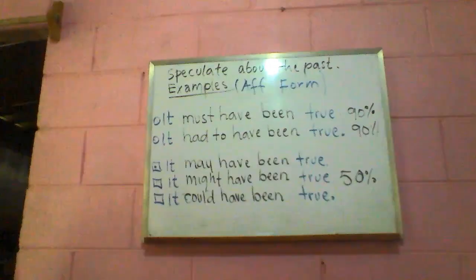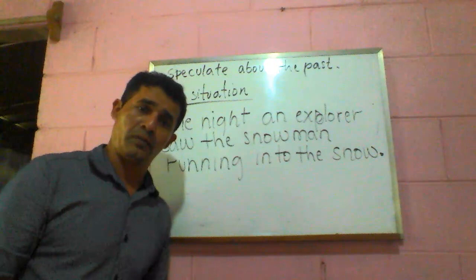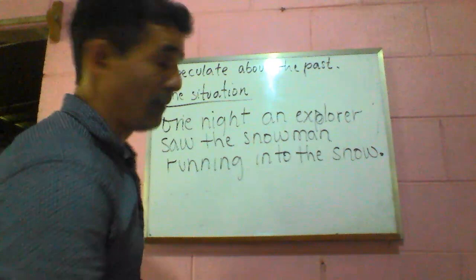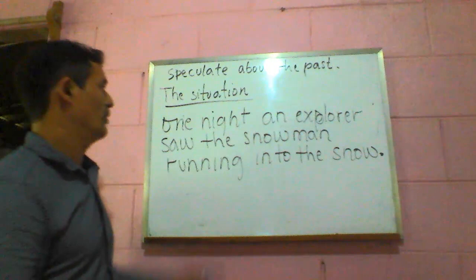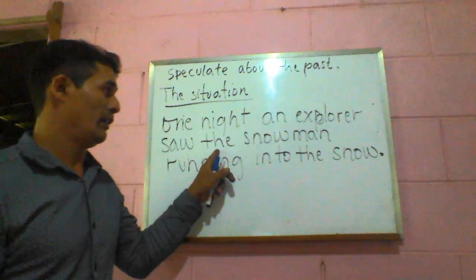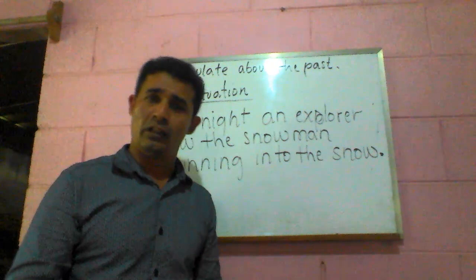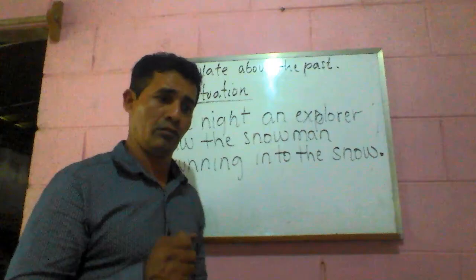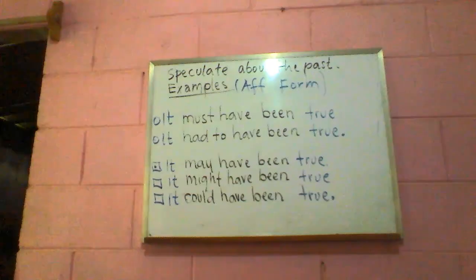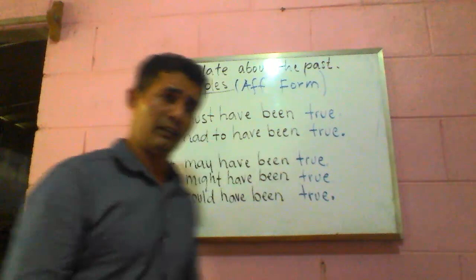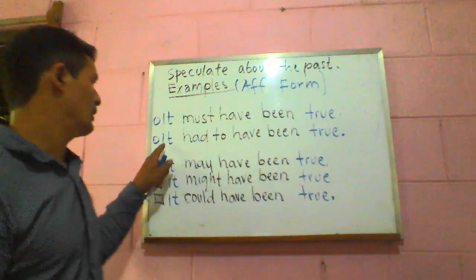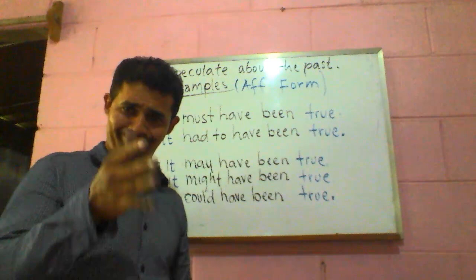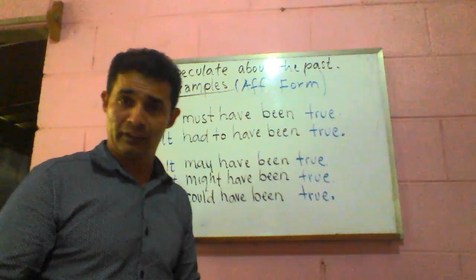Now I have a situation to explain how to use modal verbs to speculate about the past in affirmative form. One night, an explorer saw a snowman running into the snow. What can you think about it? Here are the examples: 'it must have been true,' 'it has to have been true' — use these if you are almost sure, about 90% certainty.